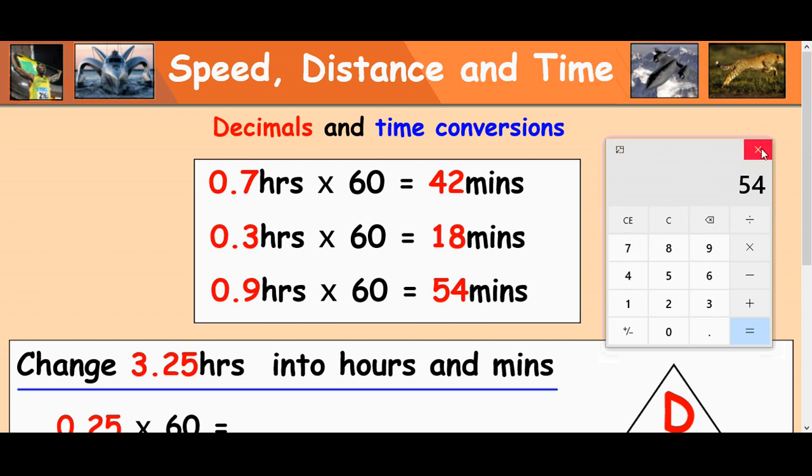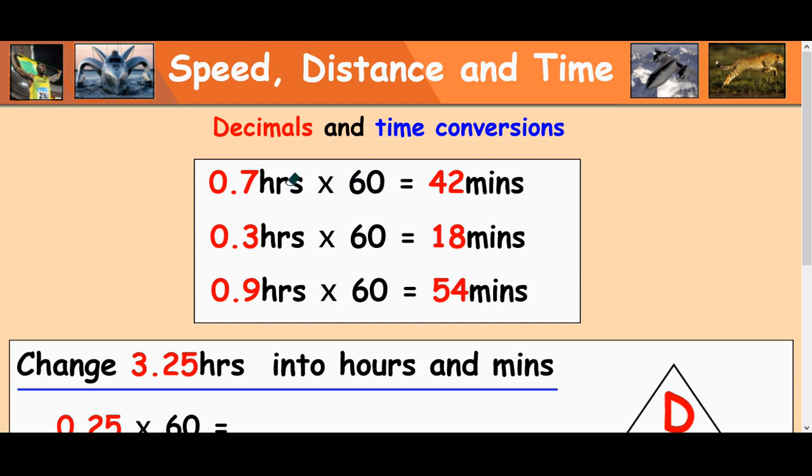Now some of you might notice here that really what's happening to do 0.7 times 60 is kind of like 7 times 6, isn't it? So your times table is 42. Because that's like 7 divided by 10 and that's like 6 times 10. So they're kind of canceling each other out. So it's just 7 times 6, 3 times 6 and 9 times 6, which is quite nice.